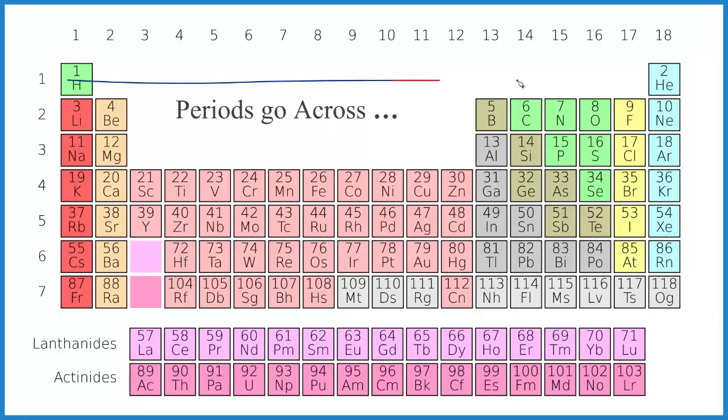So hydrogen to helium, that's the first period. Period two right here. Period three and so on. They go across just like these periods here would go across the page.